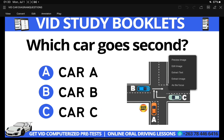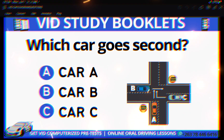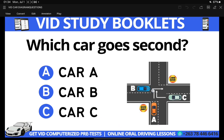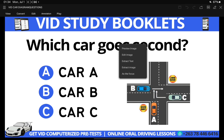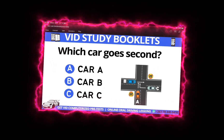The question asks which car goes second — it has to be Car C. To recap the order: B is first, C is second because C cannot turn right in front of B, and A is last because A is coming to a giveaway sign and must give the right of way to traffic approaching from both sides. That's the end of this video — I hope it was helpful. Remember to subscribe for more content like this. Goodbye!